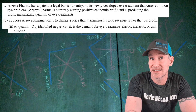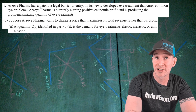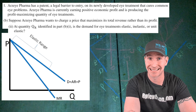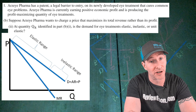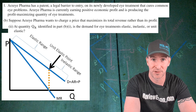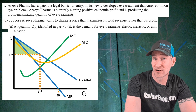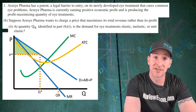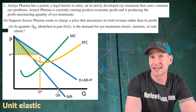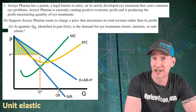For part B-II, we have to say if the demand curve at QR is elastic, inelastic, or unit elastic. Where marginal revenue is positive, the demand curve above is elastic. Where marginal revenue is negative, the demand curve above is inelastic. And the point in the middle where marginal revenue is zero is the unit elastic point on the demand curve. Since QR is at the point where marginal revenue is zero, the demand curve above is unit elastic. Note that a lower quantity would be elastic and a higher quantity inelastic, so you could get a consistency point if you misplace QR.